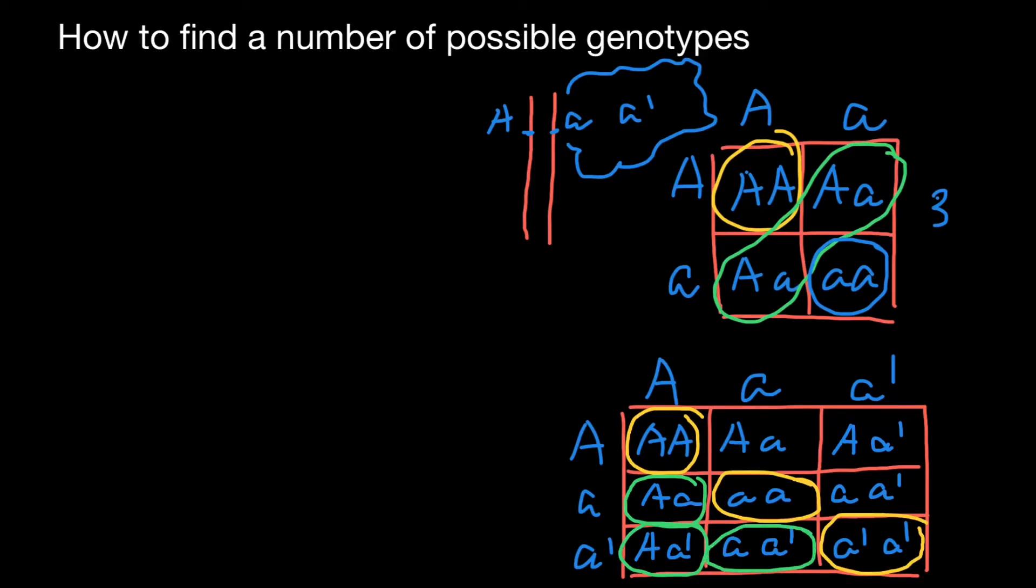But if you would take a look, this genotype here is already present here in the table. So it's just repetition. Genotype here is already present in this corner. And genotype, which is here, is also present in this corner. So we can cross out this repetitive genotypes. And we are going to get a number of unique genotypes, which is going to be six. Now, with three alleles, we got six genotypes.